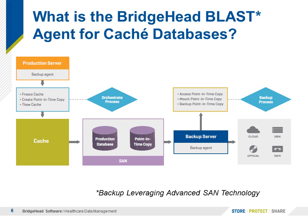We're then going to communicate with the SAN to split that disk or capture that snap technology so that we can back up the database from that SAN using the backup server — also referred to as the gateway node. This is what's actually going to create the backup from the point-in-time copy. This releases that production disk so that the live environment is now back up and operational. We'll then mount that on the appropriate devices and back up from that point going forward.